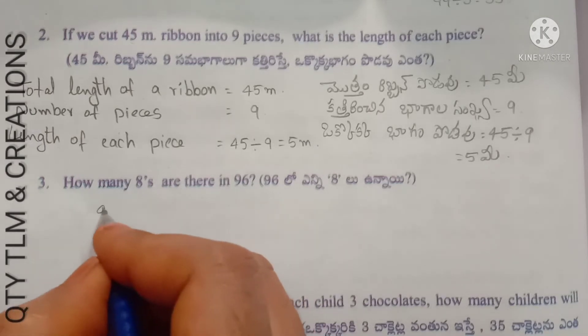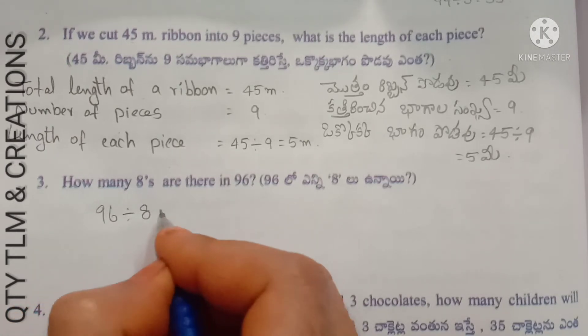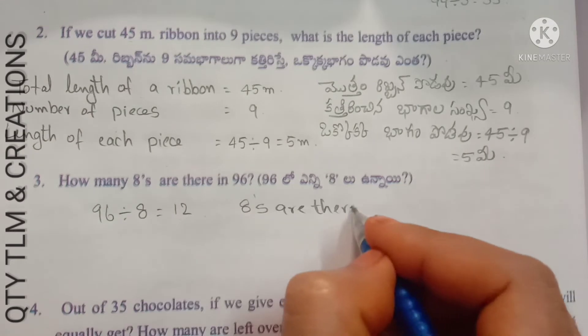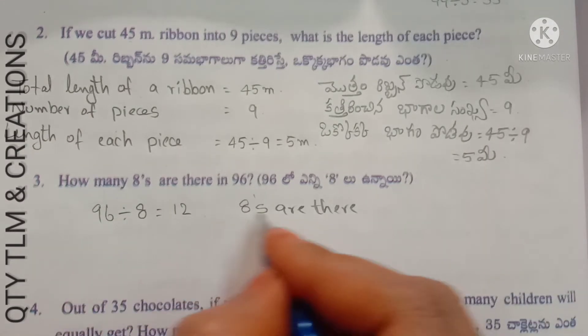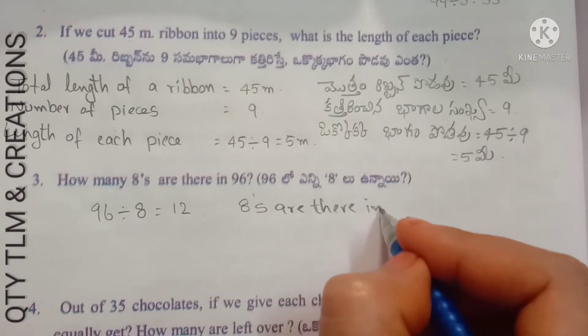Next question: how many 8's are there in 96? 96 divided by 8 equals 12. So there are twelve 8's in 96.